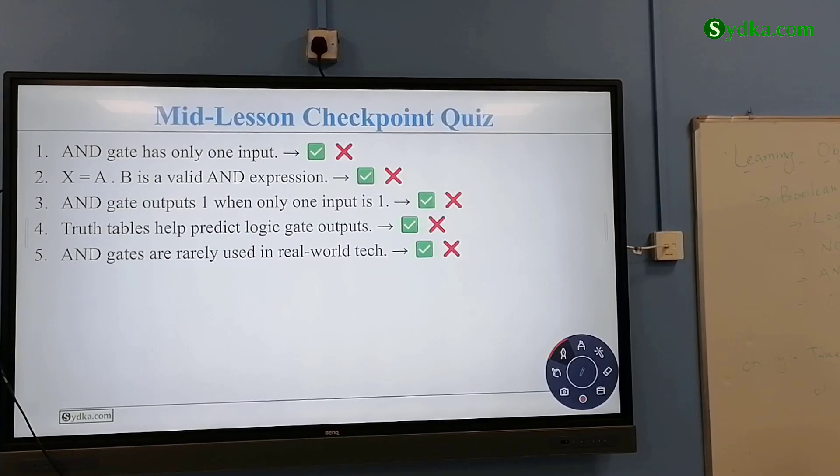First question: AND gate has only one input? False, good. Next one: X is equal to A dot B is a valid AND gate expression? Good. AND gates output one when only one input is one? Good. Truth table predicts logic gates output? True.